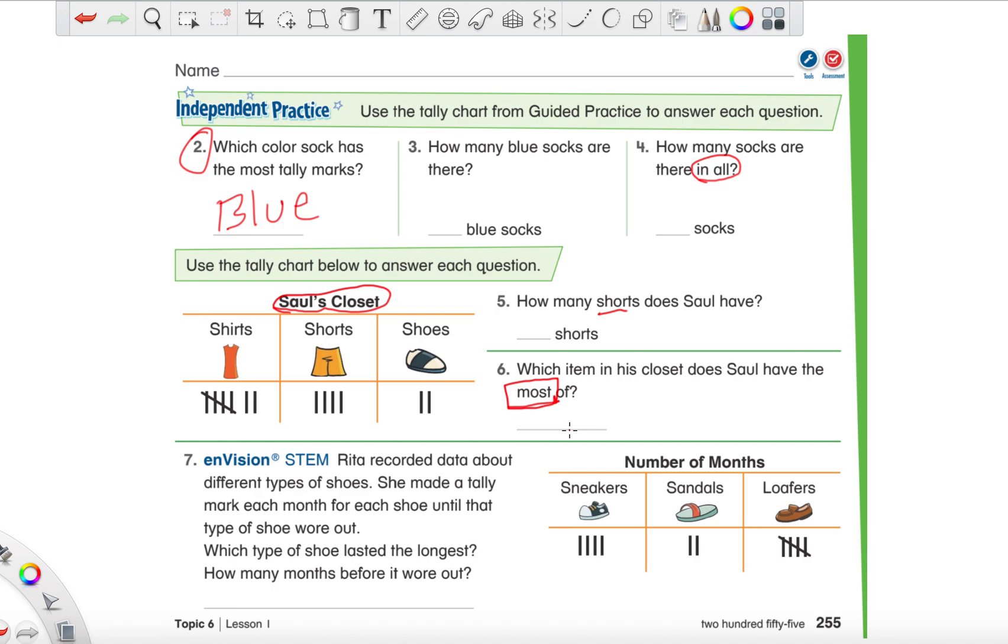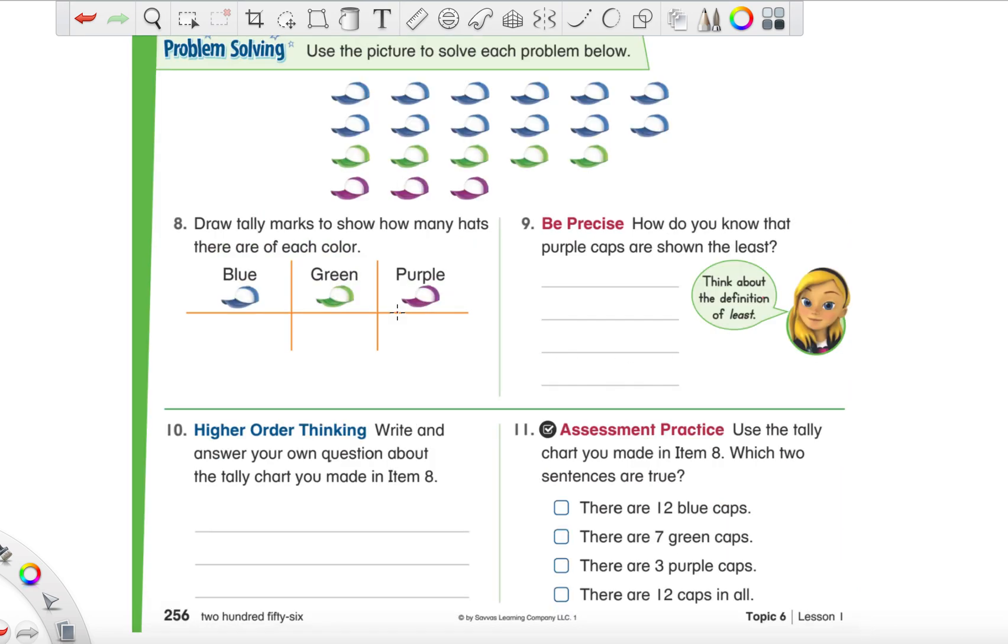So number five, how many shorts does Saul have? So we have a person named Saul right here, and this is his closet. That's what it tells us up here. He has shirts, shorts, and shoes. How many shorts does he have? The chart tells you. Number six, which item in his closet does Sal have the most? The most, that is your keyword. Does he have shirts the most, shorts, shoes? You tell me, and then write that word on this line. But that's not it. There is one more thing I do want you to do for your independent work, and that's actually on the next page. So make sure you turn to page 256 and I'll explain the last problem to you.